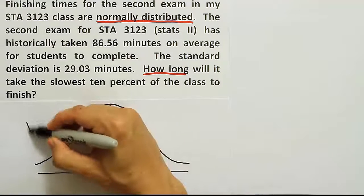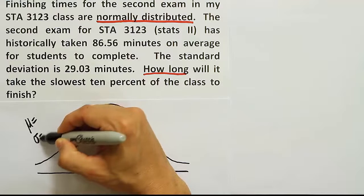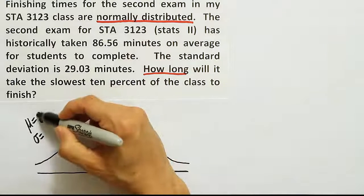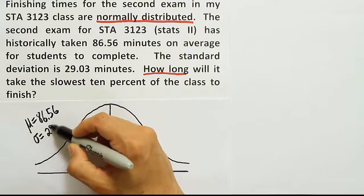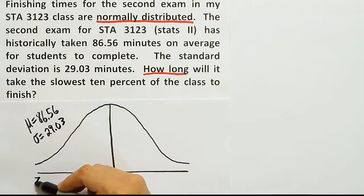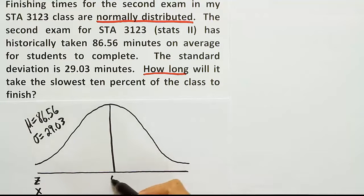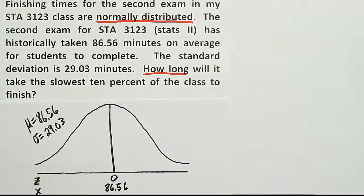I've drawn my bell curve. I'm going to go ahead and label the mean and the standard deviation. The mean is 86.56. The standard deviation is 29.03. And like always, we have a z-axis and an x-axis at the bottom. The z-axis is centered at zero. The x-axis will be centered at 86.56 minutes.